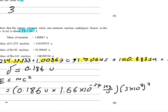You can punch that into your calculator as well, and you get 2.77 times 10 to the negative 11 joules. Which is what we expected, 2.8 times 10 to the negative 11 joules.